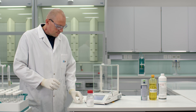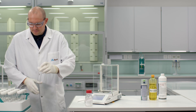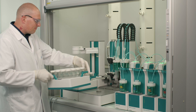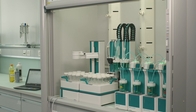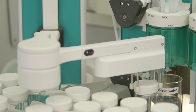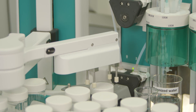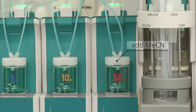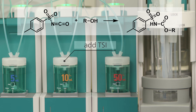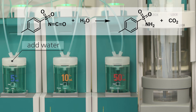The sample size depends on the expected hydroxyl number of your sample. Then you only bring the sample rack to the Omnis sample robot. Start your method and the beaker is brought to the workstation. You should use covered beakers, as additional moisture can falsify your result. TSI is added, which reacts with the hydroxyl groups of the sample to form an acidic carbamate. Water is added to convert the excess TSI to sulfonamide, so it won't interfere with the titration.